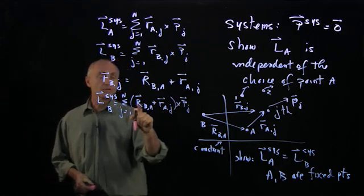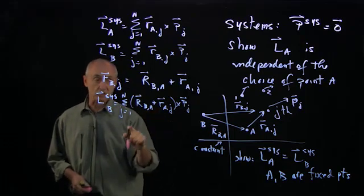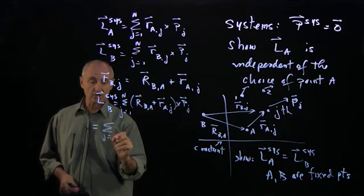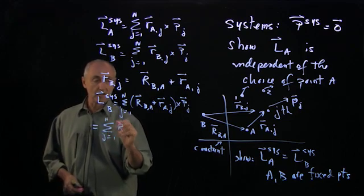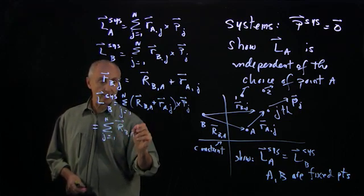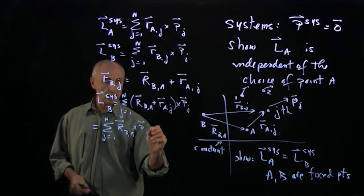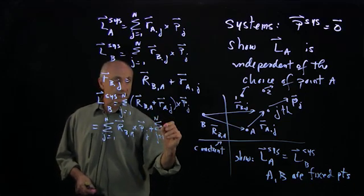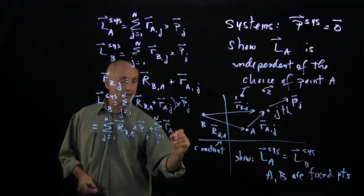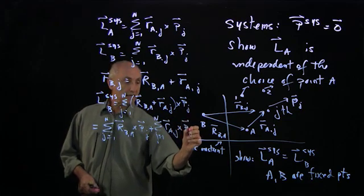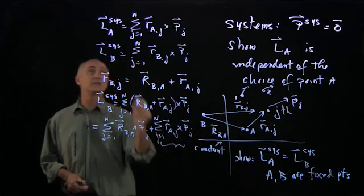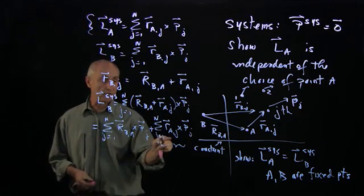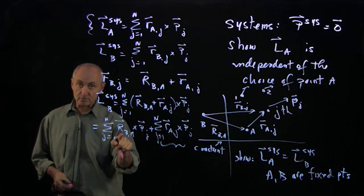The angular momentum about B is the sum over j from 1 to N of (R_BA + R_AJ) cross p_J. The vector product distributes over vector addition, so this gives two sums: the sum over j of R_BA cross p_J, plus the sum over j of R_AJ cross p_J. Already, you can see that this second term is the angular momentum of the system about A.